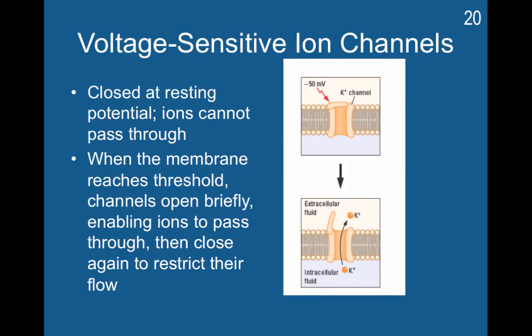These voltage-sensitive ion channels are really important for an action potential to occur. At resting potential, they are closed and ions cannot pass through. When the membrane reaches threshold, the channels open briefly, enabling ions to pass through, and then they close again to restrict their flow.